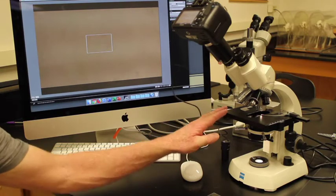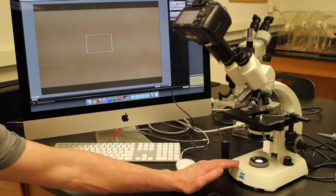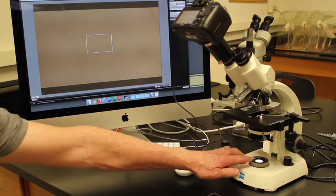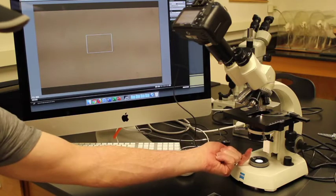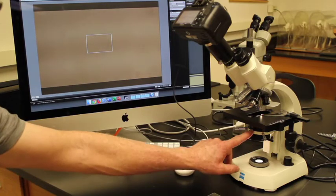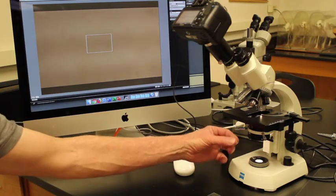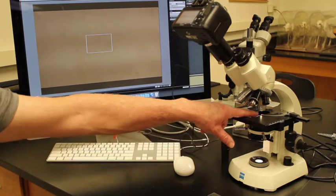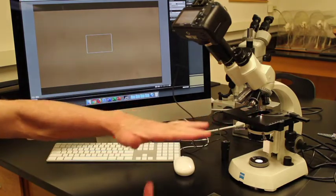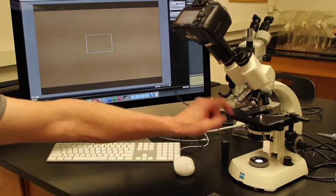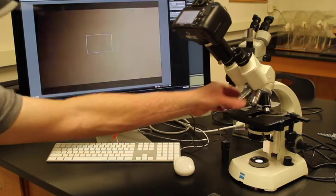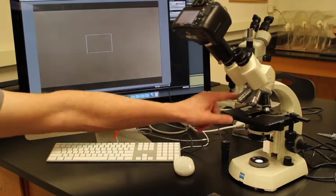This is the microscope we'll be using. This is a brightfield microscope. Brightfield microscopes begin at the bottom with a light source. The light source shines light up through the sub-stage. There's a condenser that basically focuses light. The light passes through an object, then goes directly through.